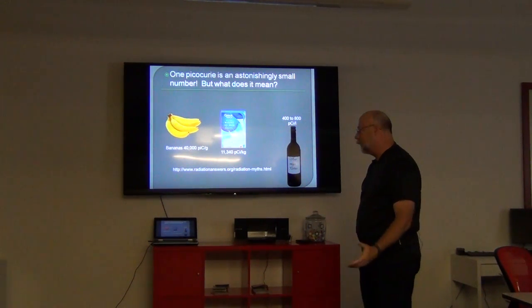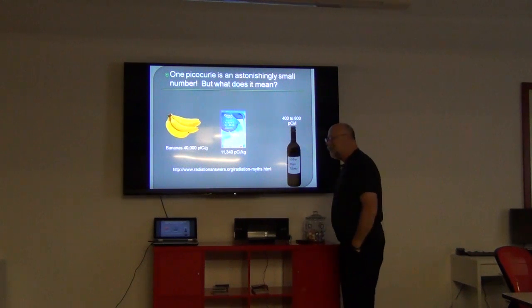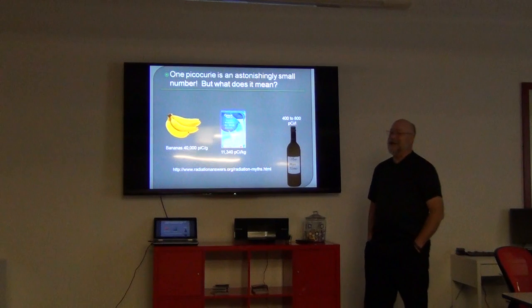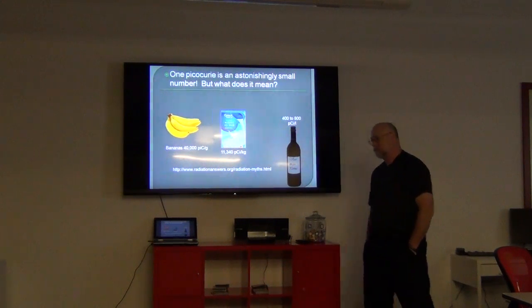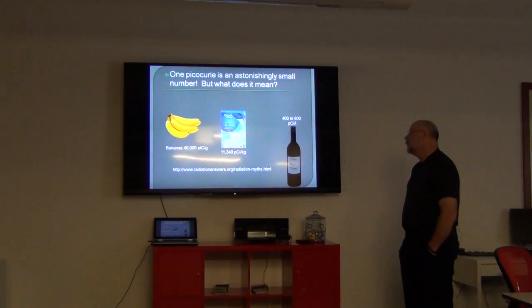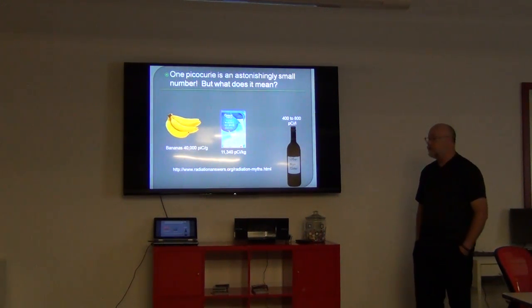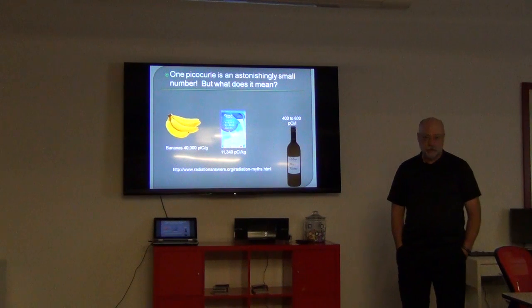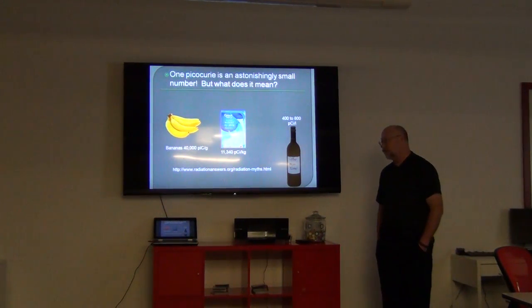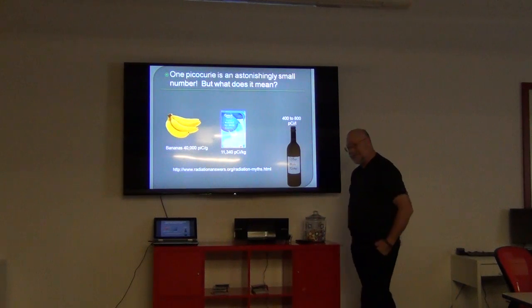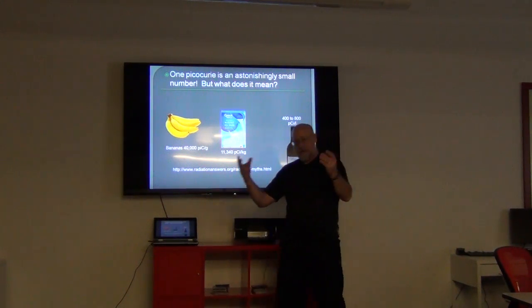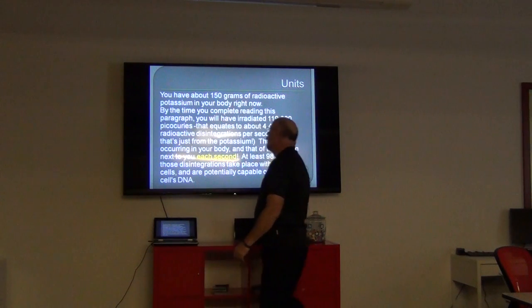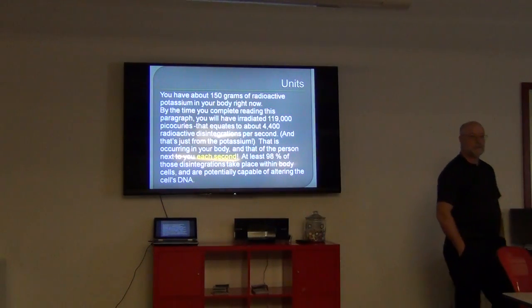So now let's put those kind of activities into perspective. Remember, we're worried about 4 picocuries per liter, right? Bananas weigh in at about 40,000 picocuries per gram, which would be about 80,000 picocuries per liter for a banana. Milk comes in at about 800 to 1,200 picocuries per liter, about 11,000 picocuries per kilogram. Wine, about 400 to 800 picocuries per liter. We are surrounded by radiation. Everything about you right now, you are swimming in radioactive emanations. Can everybody read that? Is that too small? I'd like you to read that.